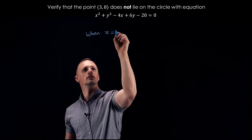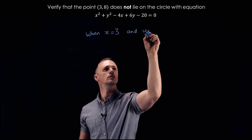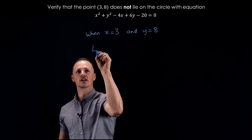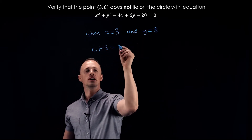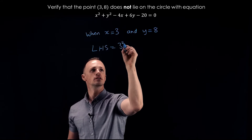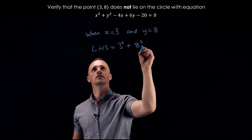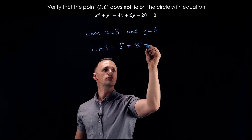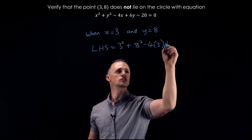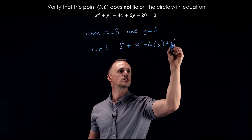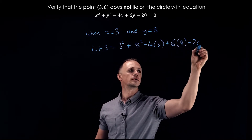When x equals 3 and y equals 8, the left hand side of this equation becomes x squared — so three squared — plus y squared — eight squared — minus four lots of x, so minus four times three, plus six lots of y, so six times eight, minus 20.